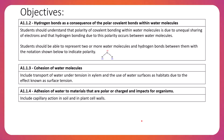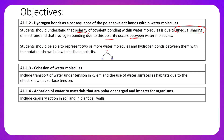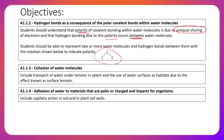A1.1.2 says hydrogen bonds are a consequence of the polar covalent bonds within water molecules. Students should understand that polarity of covalent bonding within water molecules is due to unequal sharing of electrons, and that hydrogen bonding due to this polarity occurs between water molecules. Students should be able to represent two or more water molecules and hydrogen bonds between them with the notation shown, to indicate polarity.